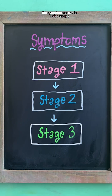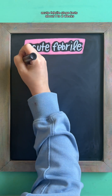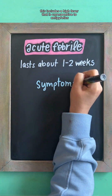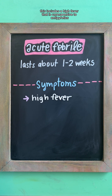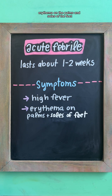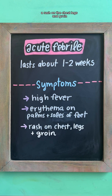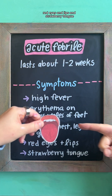The symptoms occur in three stages. The acute febrile stage lasts about one to two weeks. This includes a high fever that is unresponsive to antipyretics, erythema on the palms and soles of the feet, a rash on the chest, legs, and groin, red eyes and lips, and strawberry tongue.